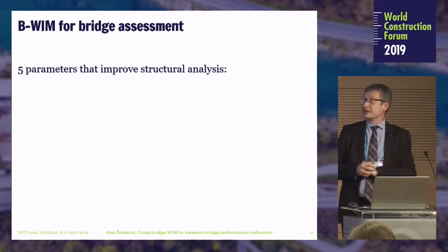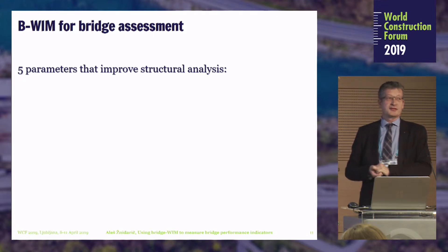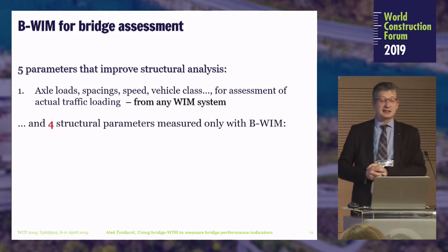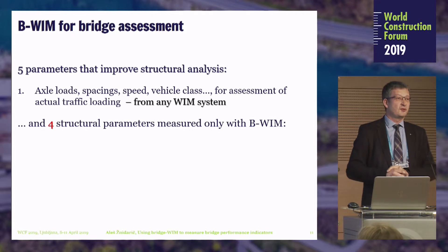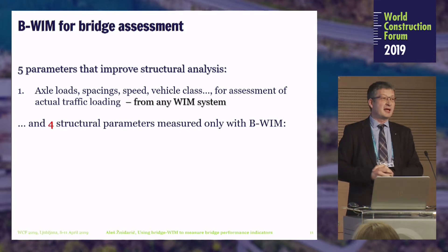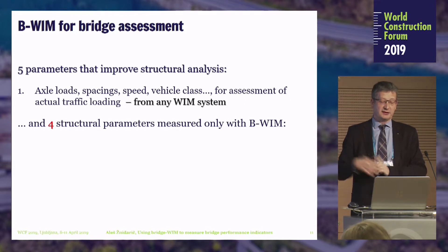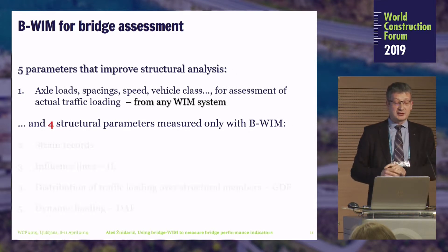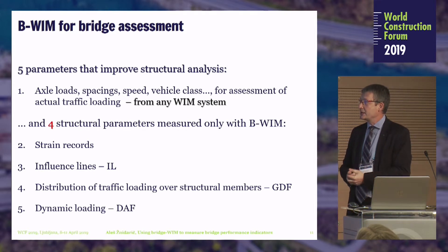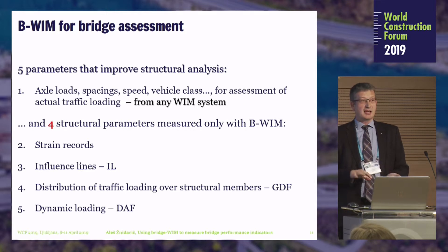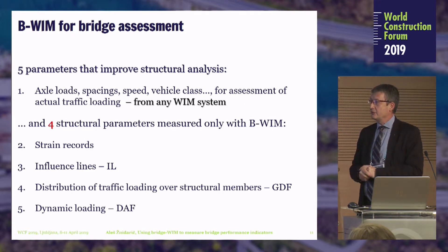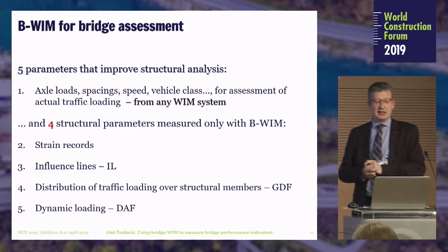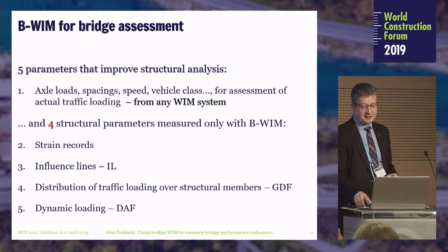So how do we use this data for bridge assessment? There are actually five parameters that improve structural analysis and can be obtained from these systems. The first ones are axle loads, axle spacing, speed, vehicle class, and all vehicle information you need — though these can also be obtained from any other weigh-in-motion system with sensors built into the pavement. But we can also measure four structural parameters only obtainable with BWIM: the strain records themselves, influence lines — not theoretical but true measured influence lines — the distribution of traffic loading over structural members (the girder distribution factor as included in some codes), and the dynamic loading.